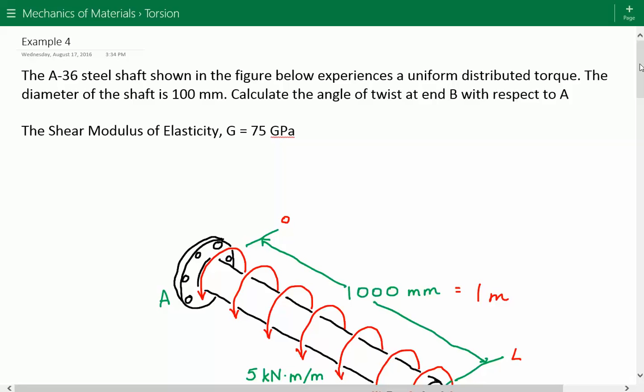Hey everybody, this is example number four for mechanics of materials covering torsion. The problem statement is the A-36 steel shaft shown in the figure below experiences a uniform distributed torque.